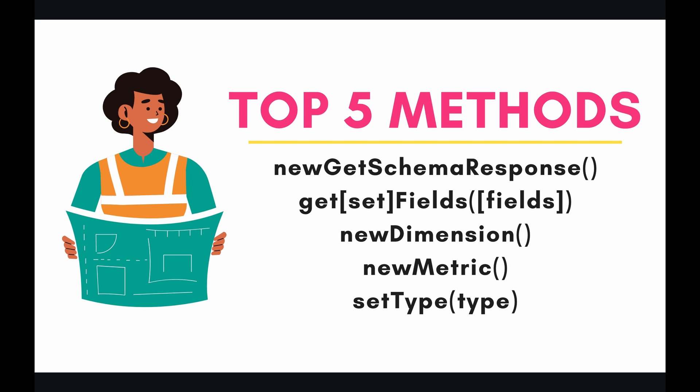The top five methods we are going to be showcasing in today's demonstration are: new getSchemaResponse, getOrSetFields, newDimension, newMetric, and finally setType. So let's head on over to the code and start building out our schema.